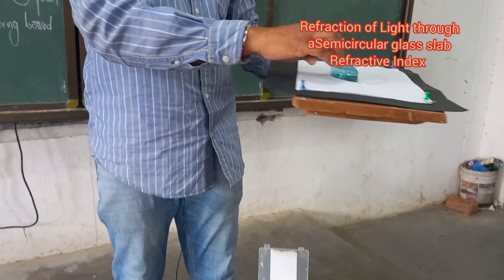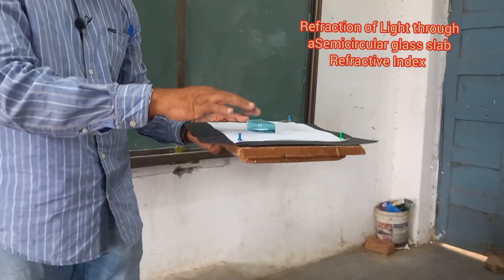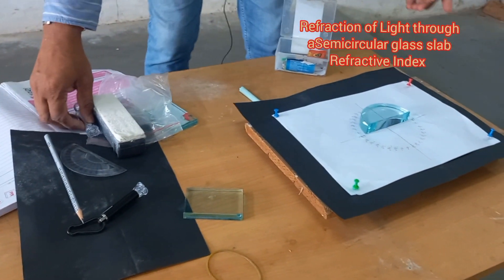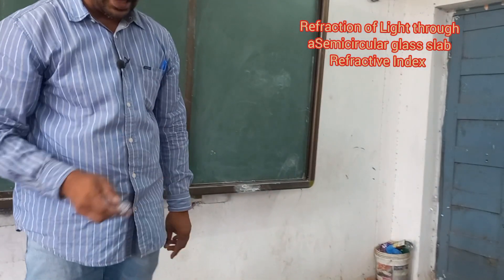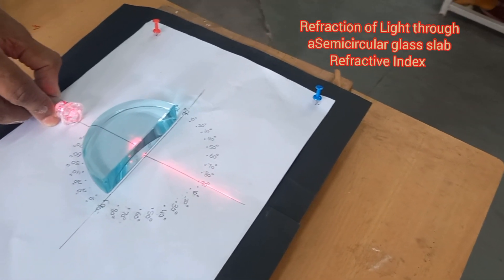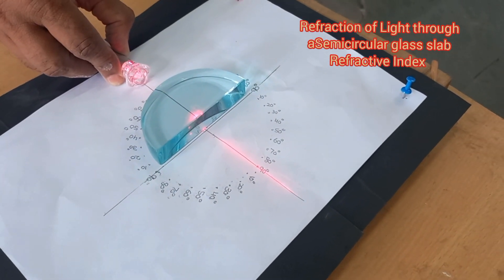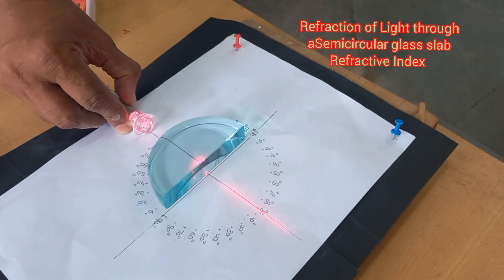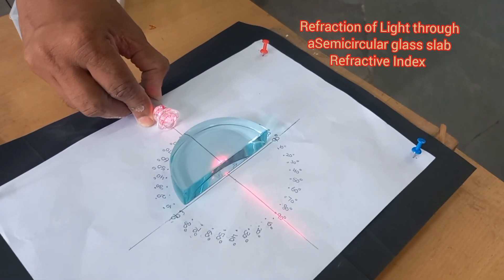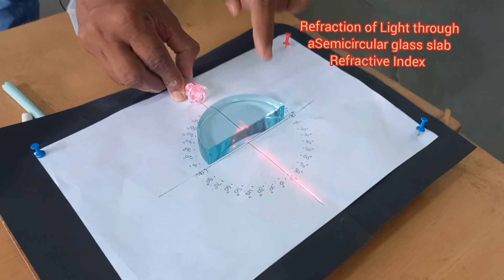Now light is traveling from the denser medium to the rarer medium — here glass is denser and air is rarer. Observe: this is the laser torch. When light is incident at an angle of zero degrees, the angle of incidence and angle of refraction is also zero. When light is incident normally, the speed of light changes but it suffers no deviation.